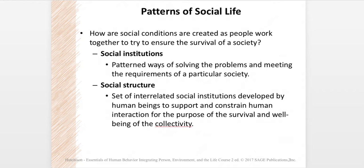How are social conditions created as people work together to ensure the survival of society? Social institutions are one way to do this. Social institutions are patterned ways of solving problems and meeting the requirements of a particular society. In caveman days, the mother and father took care of whatever issues came up — education, protection, law enforcement — all taken care of by the family unit. But as life became more complex, most of those functions have been farmed out to our social institutions.